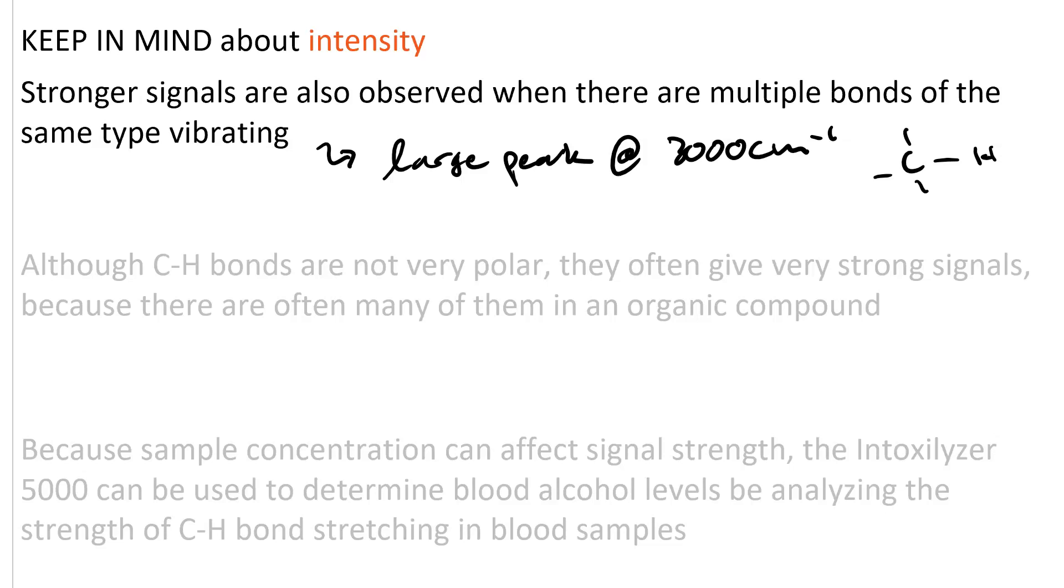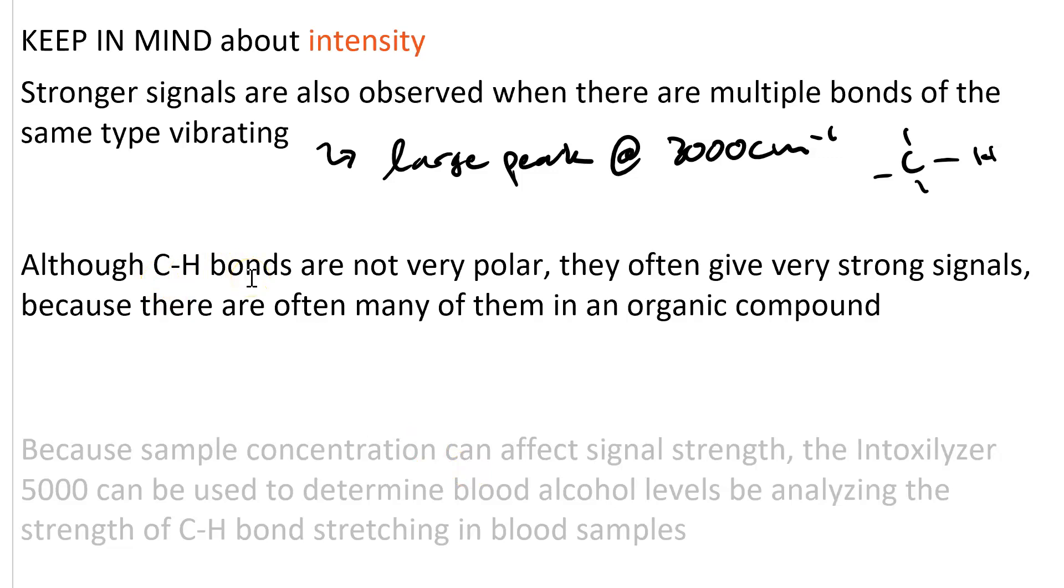They all add up to give what looks like one very large peak. But if you look at it closely you can see that it's composed of a bunch of smaller bands. So even though a CH bond is not very polar, there are so many of them in an organic compound that this is one of the largest peaks you see.